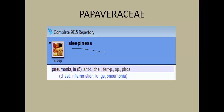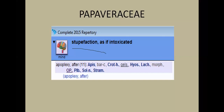There is another rubric: 'stupefaction as if intoxicated after apoplexy,' where a physical event such as brain hemorrhage or cardiac attack causes mental stupefaction. This rubric contains 11 remedies, two from Papaveraceae — Morphinum and Opium. Opium is a fourth-grade remedy in this rubric. Then there is 'unconscious coma in apoplexy,' containing 22 remedies, two from Papaveraceae: Chelidonium and Opium.